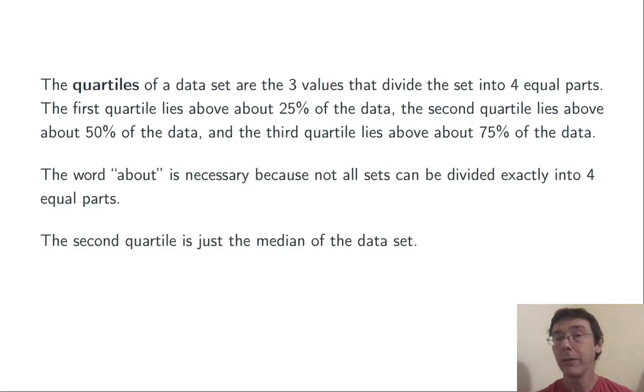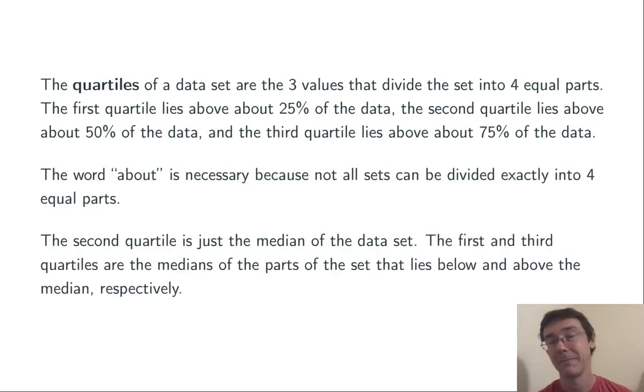The second quartile is just the median of the data set. The first and third quartiles are the medians of the parts of the set that lies below and above the median, respectively. Typically you find the first and third quartiles by first finding the median, dividing the set into an upper half and a lower half, and then finding the medians of those two halves.